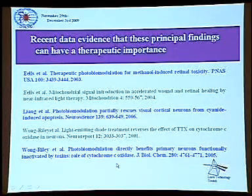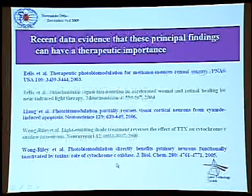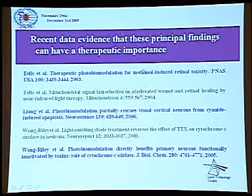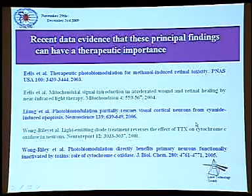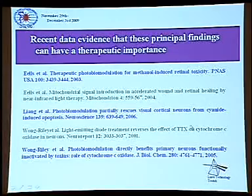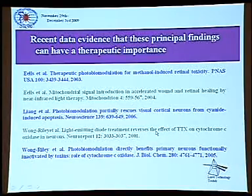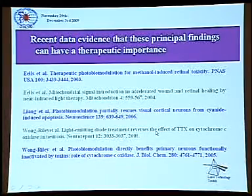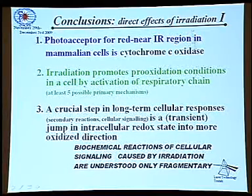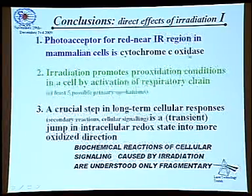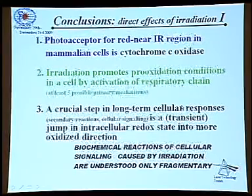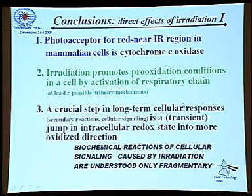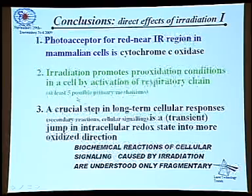A group at different universities in Wisconsin, USA, performed nice experiments connected with therapeutic importance and confirmed our results that cytochrome C oxidase is the primary photoacceptor. I recommend reading those papers. The conclusions of my lecture are: the photoacceptor for the red and near-infrared region in mammalian cells is cytochrome C oxidase; irradiation promotes a pro-oxidation condition in cells by activation of the respiratory chain; and there are at least five possible primary mechanisms we know of.